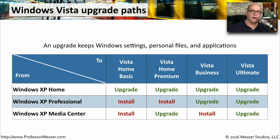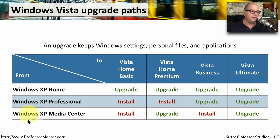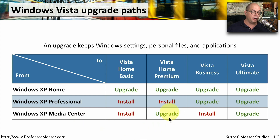When you're performing upgrades from one operating system to another, you can generally upgrade from the existing edition to a compatible edition. For example, from Windows XP to Windows Vista: you can upgrade from Windows XP Home to all editions of Windows Vista. You can upgrade from Windows XP Professional to Windows Vista Business and Windows Vista Ultimate. And if you're running Windows XP Media Center, which is almost considered a home version of Windows XP, you can upgrade to Windows Vista Home Premium or Windows Vista Ultimate.